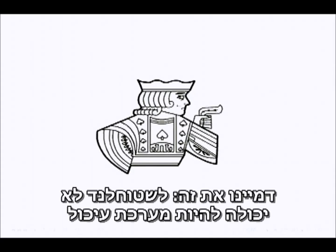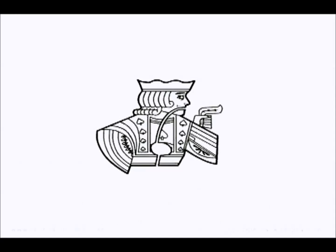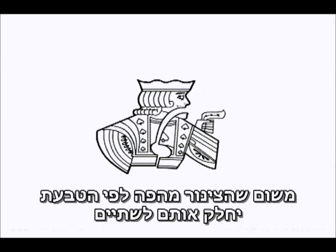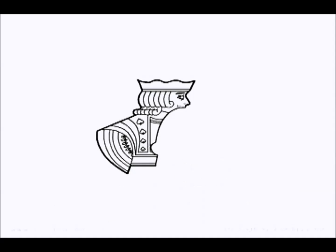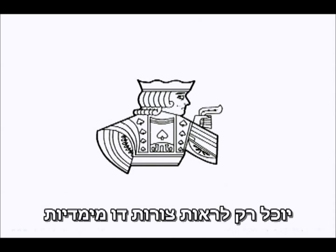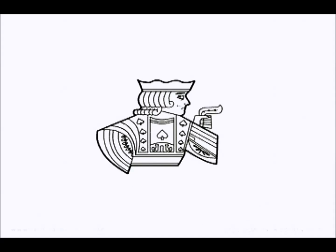A flatlander couldn't possibly have a digestive tract, because the pipe from their mouth to their bottom would divide them into two pieces. And a flatlander, trying to view our three dimensional world, would only be able to perceive shapes in two dimensional cross sections.